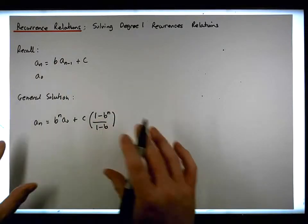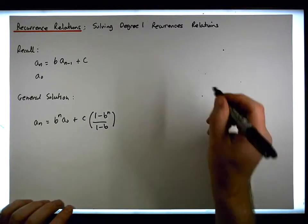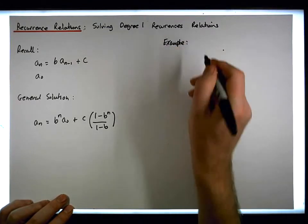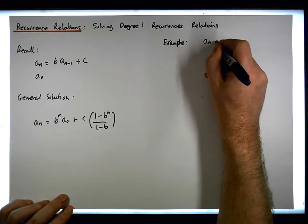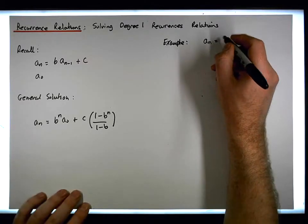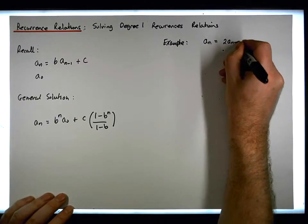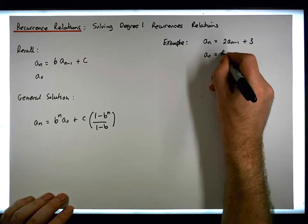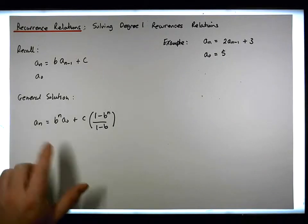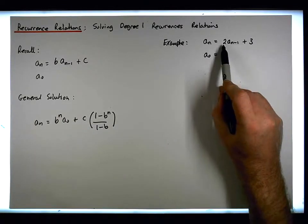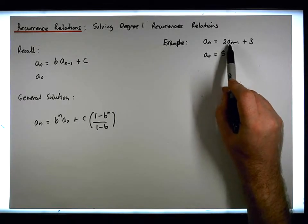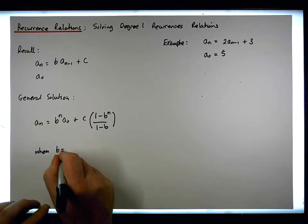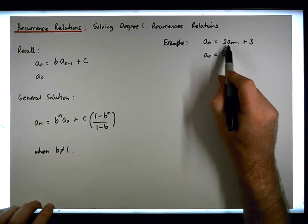Let's apply this solution with an example. We have a_n equals two times a_{n-1} plus three, and a_0 equals five. Using the general form solution, you can see that the coefficient b of a_{n-1} is not equal to one, so the formula applies — in this case b equals two.